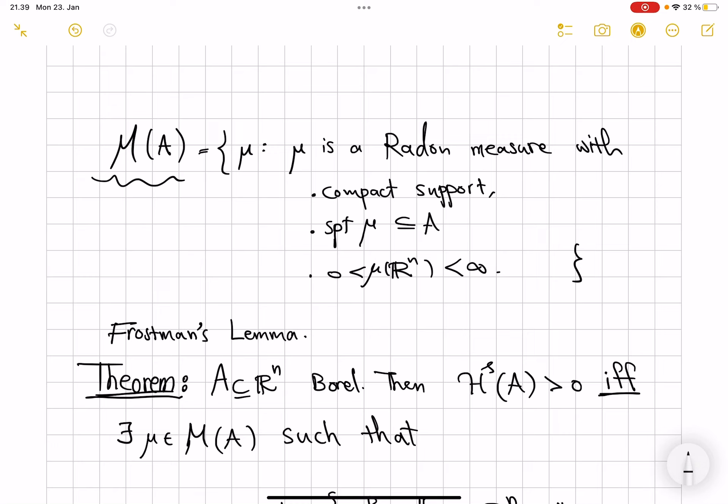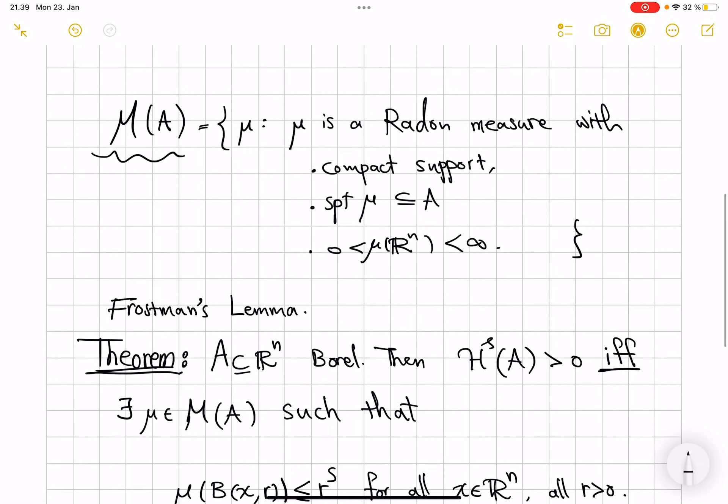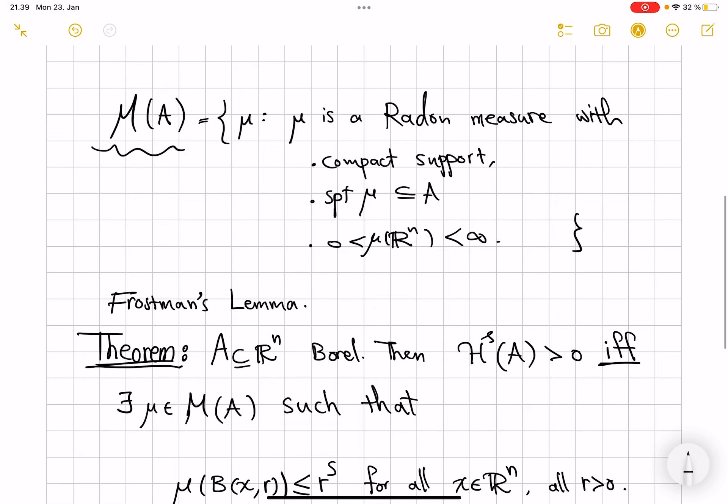The idea is that if A itself is nice, say a compact manifold, then if we take the measure on the manifold, it satisfies these conditions. But, of course, that doesn't have to be the case. We don't even have to be in the integer dimension.